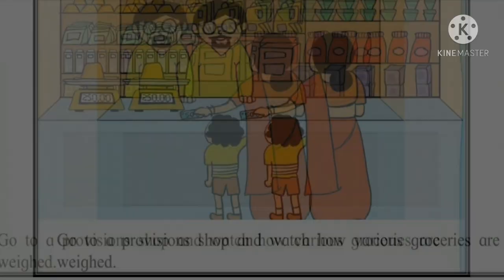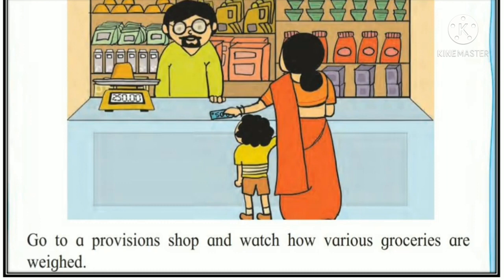Now my dear students, it's an activity for y'all. Whenever you will go to visit any provision shop, observe the various grocery items and observe how these items are weighed. And note the different types of balances which the shopkeeper used for weighing things. Now on the screen you can see a small boy with his mother visiting a provision shop. Now there that boy is observing what balances are used by the shopkeeper to weigh groceries. So in the same way, you too going to observe it.